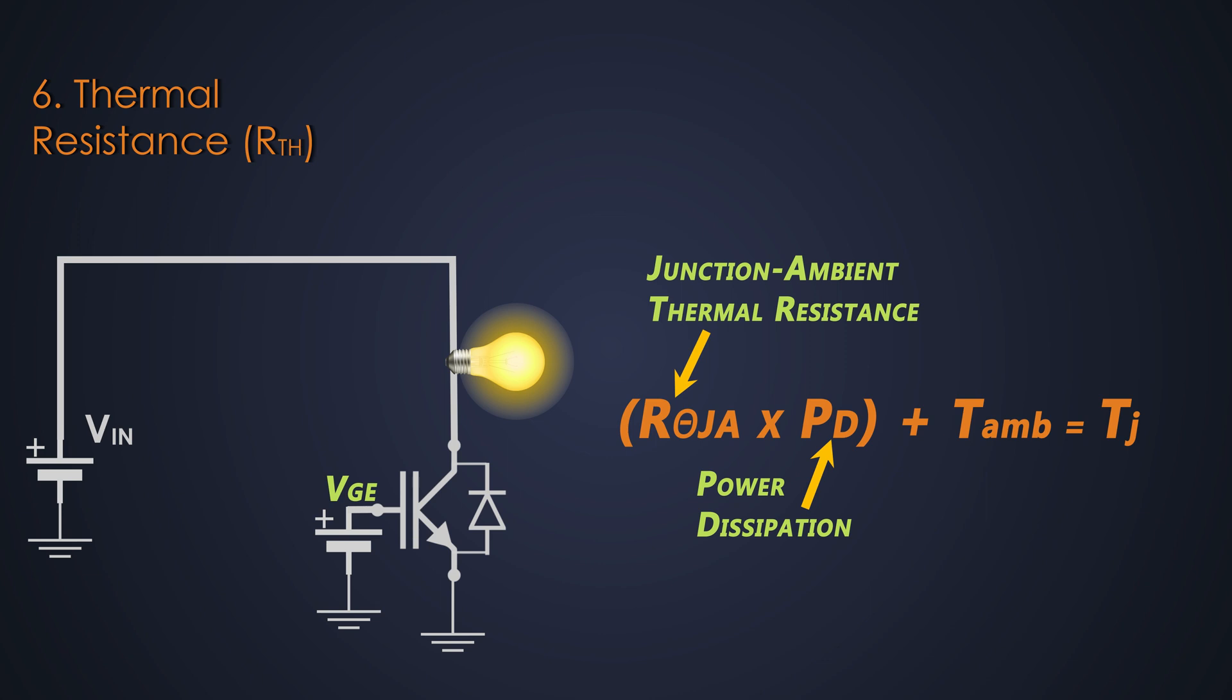Well, how to calculate this parameter? We will see in a while. And this is the ambient temperature where our circuit or the system is working. The calculated junction temperature should not exceed the maximum limit of the IGBT. Well, there is a whole different process to do the thermal calculations of a device. For now, this is sufficient to know about the basics.